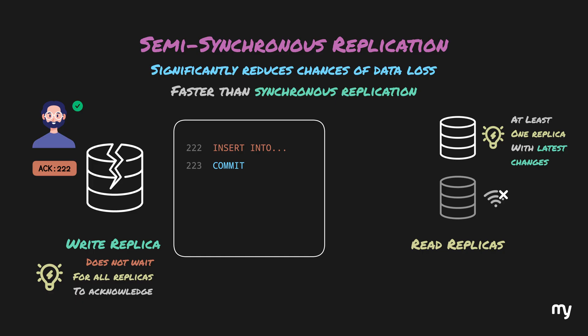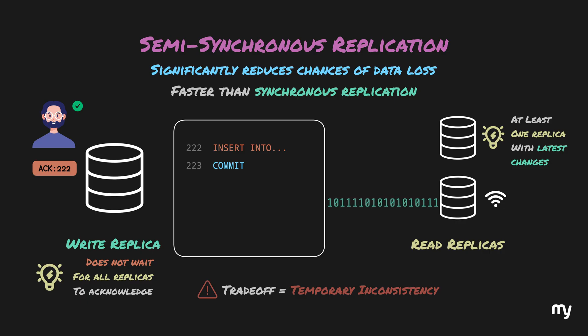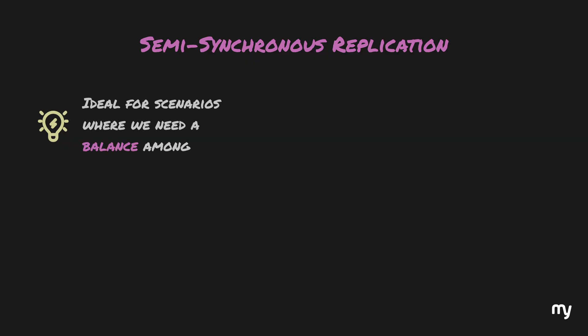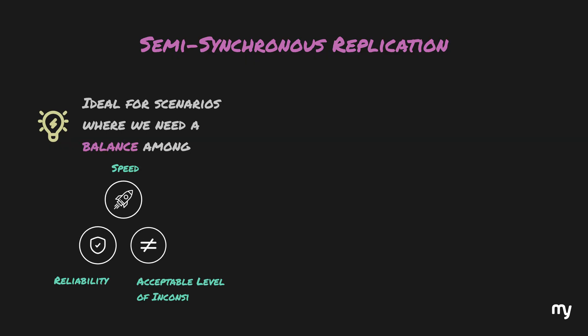This makes semi-synchronous replication especially beneficial when there are many read replicas. However, the trade-off is the possibility of temporary inconsistency. When a replica comes back online, it will pull the latest changes from the primary and eventually catch up. But during that brief window before it is updated, if a read query is sent to that replica, users might see stale data. This inconsistency is only temporary and the system will eventually achieve what we call eventual consistency.